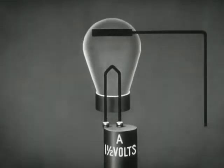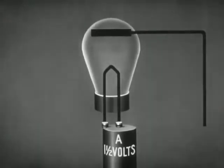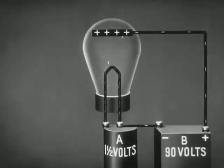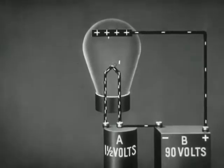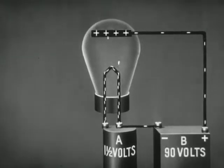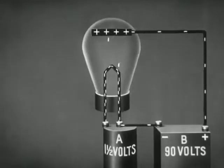Now let us add a second element called the plate. Actually the plate is a metallic cylinder surrounding the filament. The plate is connected to the positive side of a high voltage battery. Since the plate has a positive charge with respect to the filament, electrons are attracted to the plate. A stream of electrons thus flows from the filament to the plate inside the tube, to the battery, and back to the filament. This is the plate circuit.